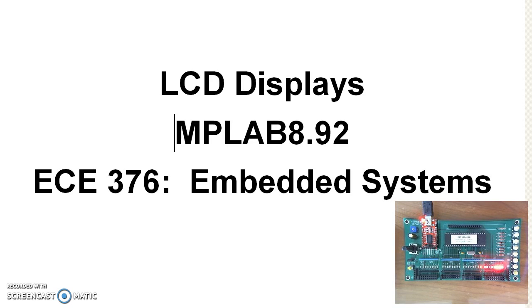One of the problems with programming a microcontroller is how to get information out as to whether your program is working or not. LED lights are kind of nice — you can have the lights blink depending on where you are in the program. An LCD display is much nicer. You can actually display information such as the value of variables or the value of different times.